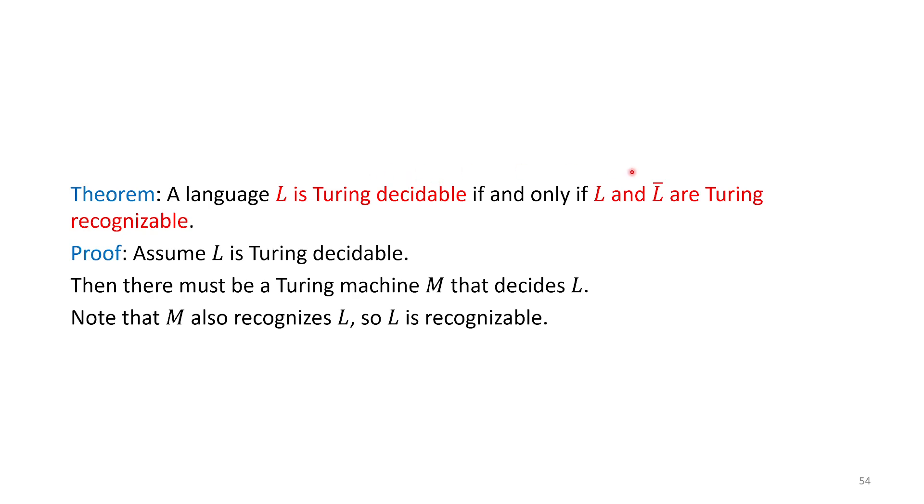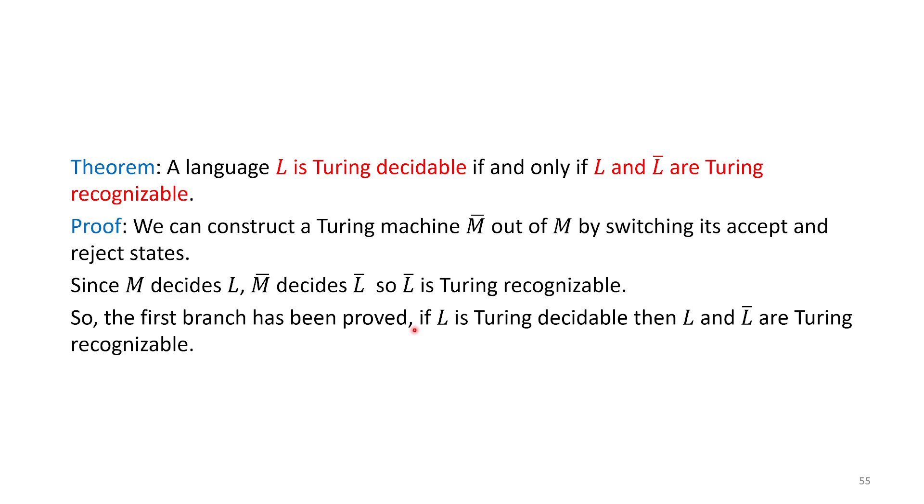Let's prove this. Let's go in this direction first. If L is Turing decidable, then L and L̄ are Turing recognizable. Assume L is Turing decidable. Then there must be some Turing machine M that decides L. Notice M also recognizes L. If you're a decider, you're also a recognizer. So L must be recognizable by definition. But what about the complement? Because M is decidable, we know it always accepts or rejects. We can swap the accept and reject state, and now it will accept all strings in L̄, therefore it should recognize L̄ as well.